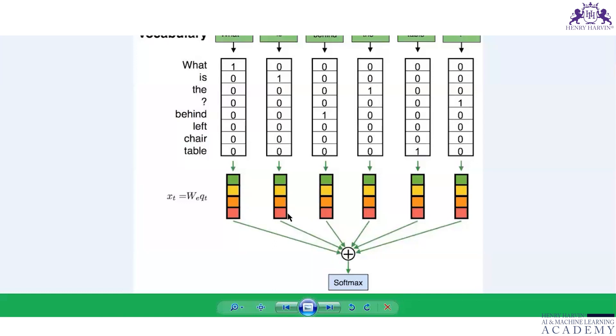We are connecting all those layers, processing through the numerical data, and then we will map it. Which word is asked again and again and what will be the sentence? What is behind left chair table? What is behind the table? Okay.